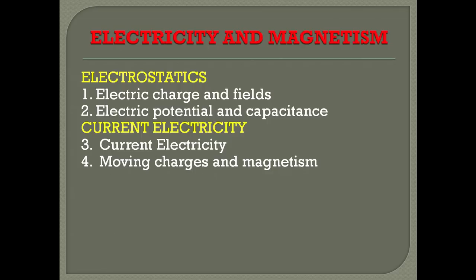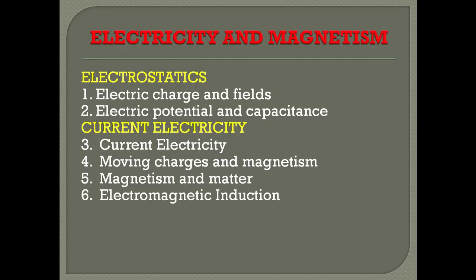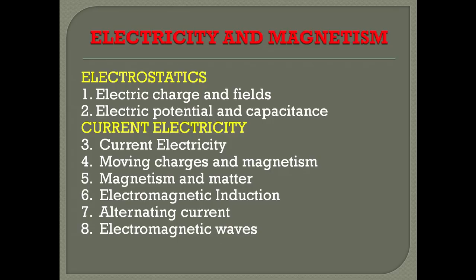The next chapter is 'Magnetism and Matter,' covering the magnetic properties of matter around us — essentially natural magnetism and natural magnetic materials. After that we combine electricity and magnetism in 'Electromagnetic Induction,' followed by 'Alternating Current,' which is a combination of electric and magnetic fields. The last chapter in this section is 'Electromagnetic Waves,' studying the waves produced by that combination of magnetic fields.